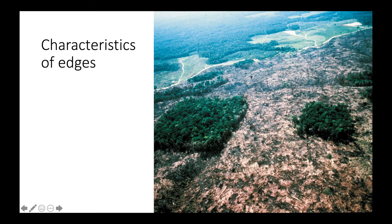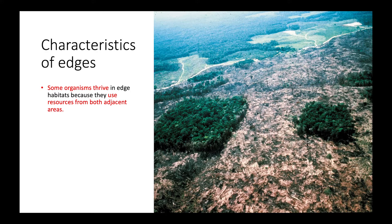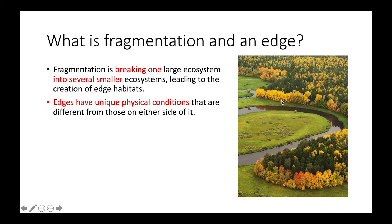Some characteristics of edge habitats: there are organisms that survive really well in edge habitats because they are able to utilize resources from both sides of that edge habitat. For example, an organism that did really well along this edge would be able to use resources from both the forested region and from the region where we have the river.